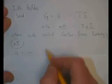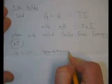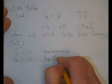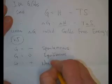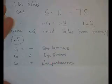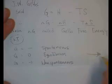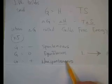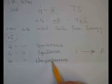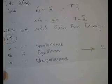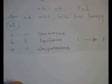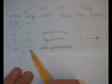If delta G is negative, the reaction is spontaneous in the forward direction. If delta G equals zero, we're at dynamic equilibrium — going forward and backward at the same rate. If delta G is positive, the reaction is non-spontaneous in the forward direction — though it would be spontaneous in reverse. In chemistry, we always define the forward direction as left to right. So calculating delta G tells us whether something is spontaneous or not.